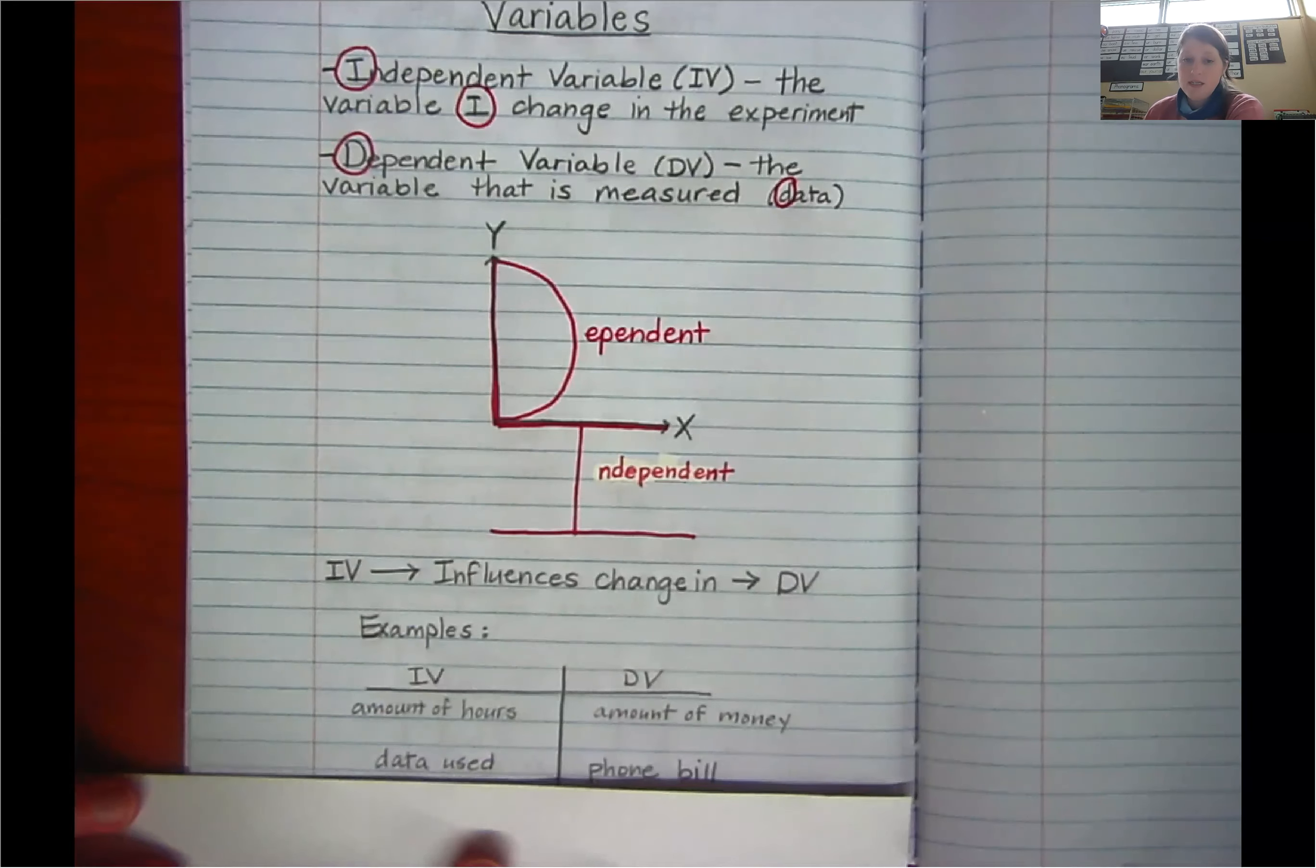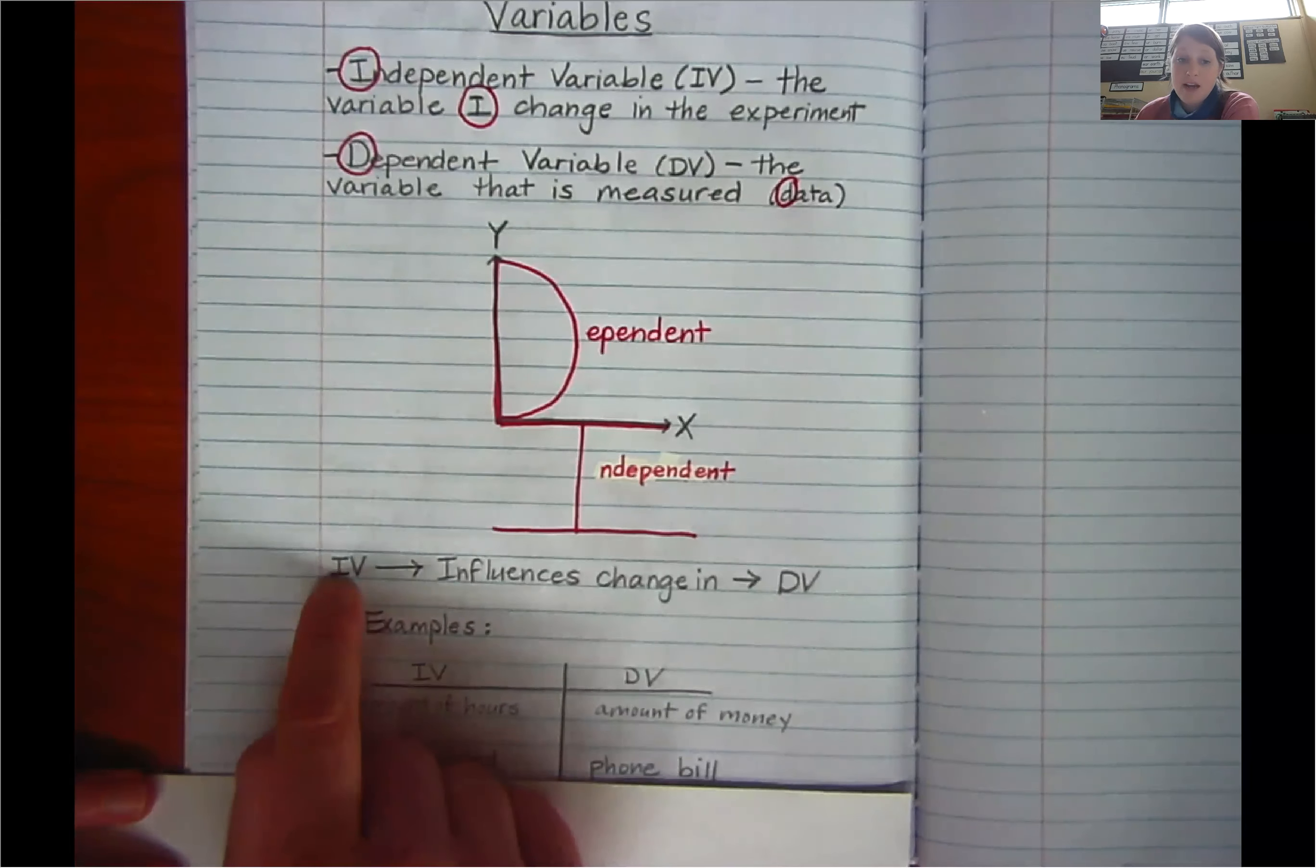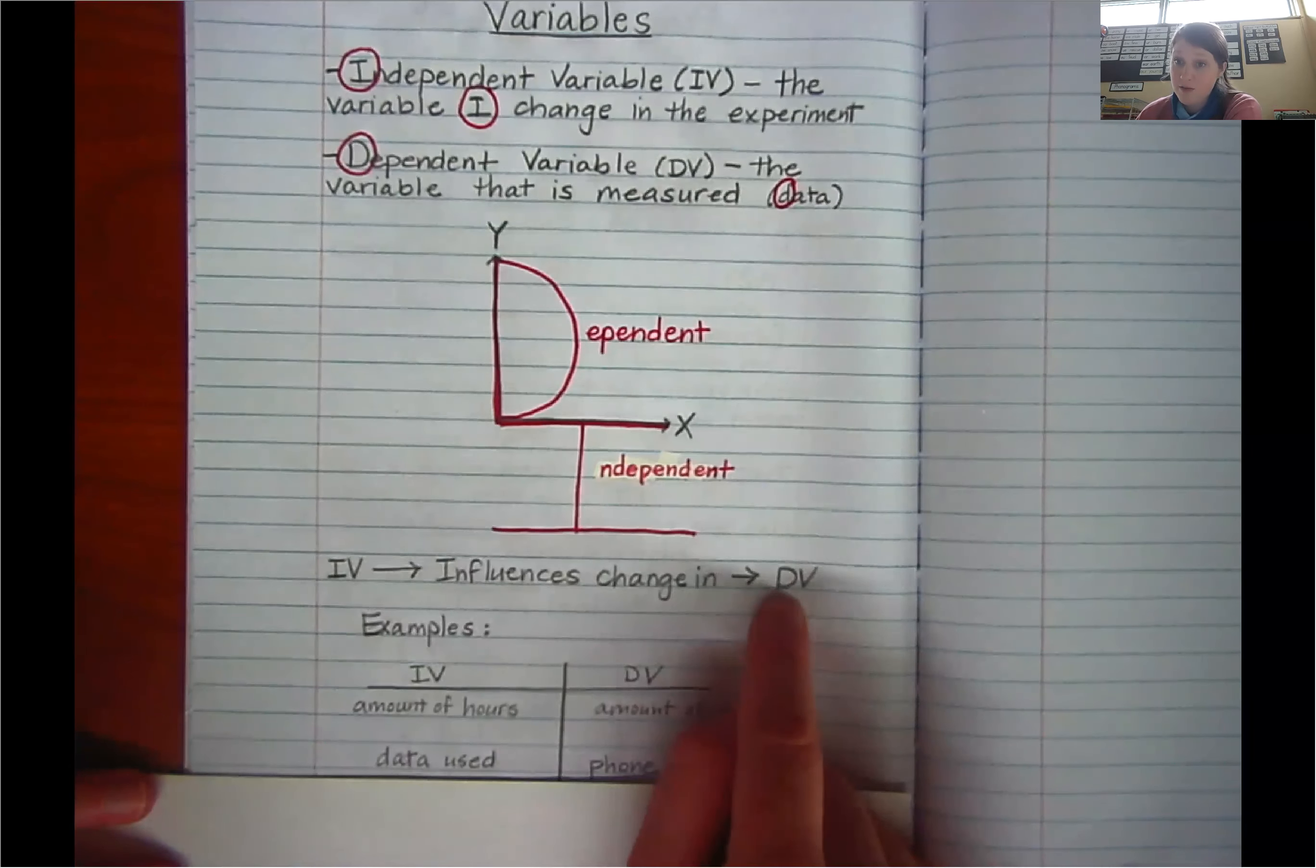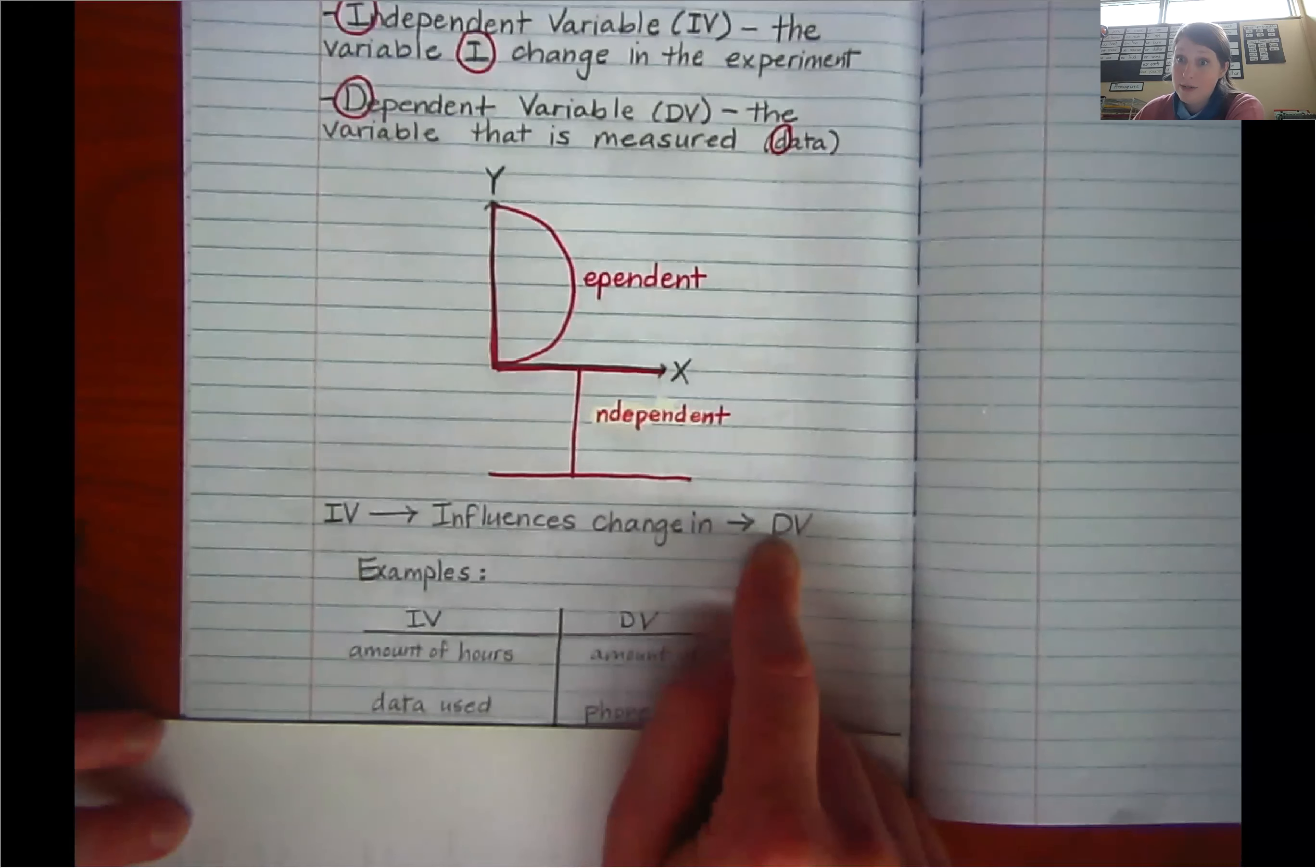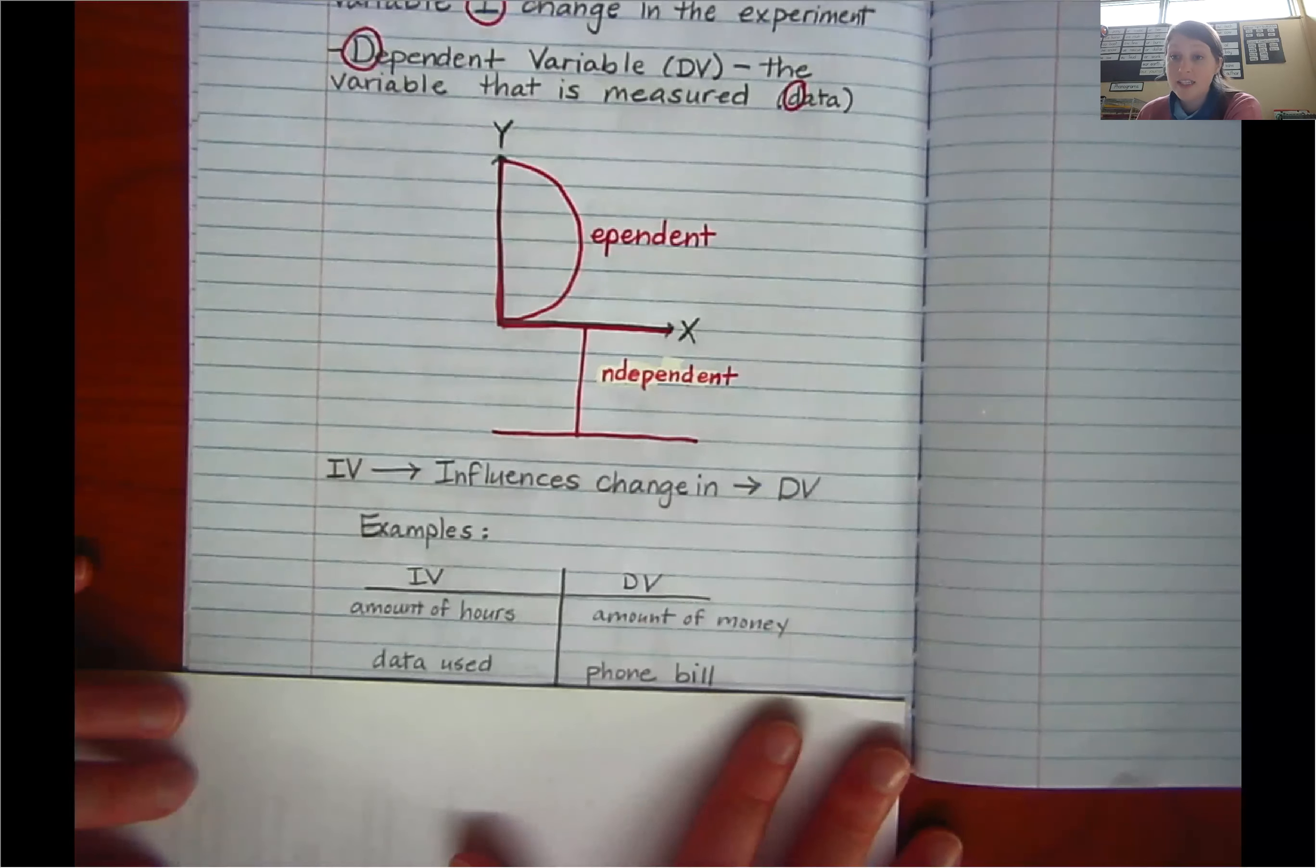The next one is data used and phone bill. So does the amount of data I use on my phone influence change in how much my phone bill costs? And the answer is definitely yes. Your parents probably know. Unless you have unlimited data, in which case good for you. I don't.